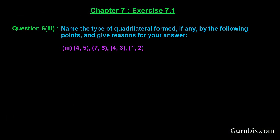Welcome friends. Let us solve the third part of question number 6 of exercise 7.1 of chapter 7. The question says: name the type of quadrilateral formed, if any, by the following points and give reason for your answer. So let us see how to solve this question. First of all, let us draw a rough sketch of the coordinate axis.